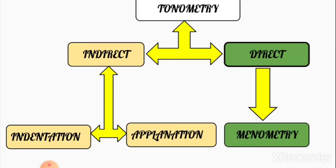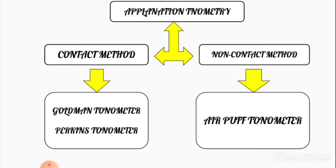Tonometry has two basic types: direct method and indirect method. The direct method is known as manometry, which is not in use nowadays. The indirect method has two subtypes: indentation and applanation. Indentation tonometry is done by the Schiotz tonometer, which is also largely obsolete. Most hospitals and clinics now use applanation tonometers widely.